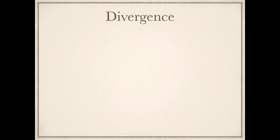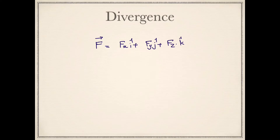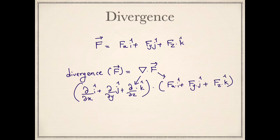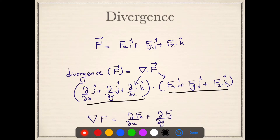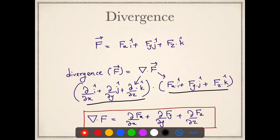Divergence is a vector operator — it operates on a vector and gives out a scalar. Let us say that the vector f, where fx, fy, and fz are the x, y, and z components of a vector. If I take a divergence of this vector, it can be written as del dot f, where del is the del operator. The divergence is a dot product of this del operator and vector f, and the final expression is: del dot f equals ∂fx/∂x plus ∂fy/∂y plus ∂fz/∂z.